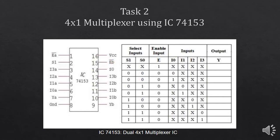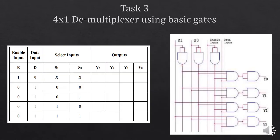Lab task number three is to implement a 4x1 demultiplexer using basic gates. It has one input, four output lines, and two selection inputs. The enable pin works on inverted logic: when enable is 0 and the data pin is high, selecting 00 gives Y0 at the output, 01 gives Y1, 10 gives Y2, and 11 gives Y3 at the output.